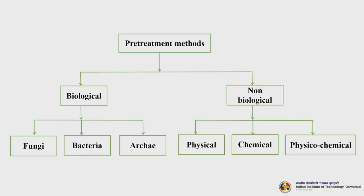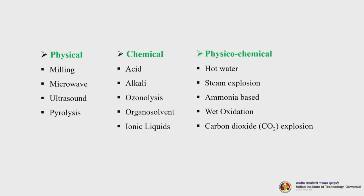There are two broad categories of pretreatment methods: biological and non-biological. Under biological, we have fungi-based, bacteria-based or archaea-based pretreatment. Under non-biological, there are physical, chemical and physicochemical methods. Physical methods include milling, microwave, ultrasound and pyrolysis. Chemical methods include acid treatment, alkali treatment, ozonolysis, organosolvent process and ionic liquids — an excellent class of green solvents. Physicochemical methods include hot water treatment, steam explosion, ammonia-based treatment, wet oxidation and carbon dioxide explosion.